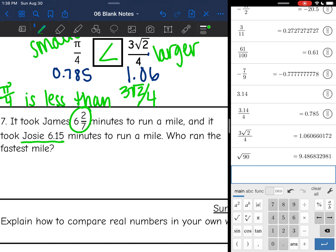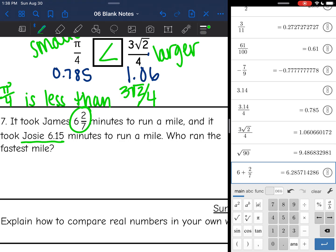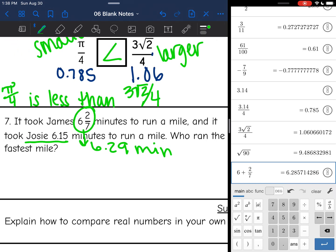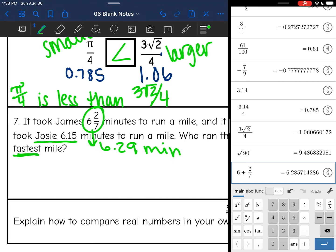So to put a mixed number in here, you need to do 6 plus and then put the fraction in. So James time was 6.29 minutes. That's what it would round to. And fastest, that is going to be the person that had the lowest time. So that would be Josie. Josie ran the fastest mile.